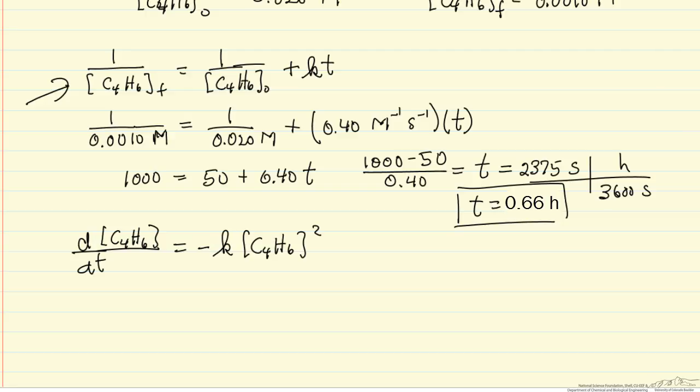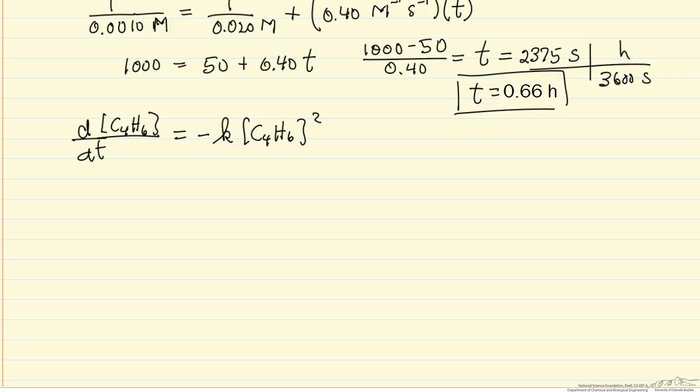And then what we're going to do is separate variables and integrate. We worked with the integrated form, this is the integrated form. So we're going to separate variables, this differential C₄H₆ concentration squared, and on the right side we have this.